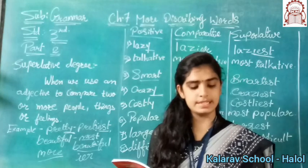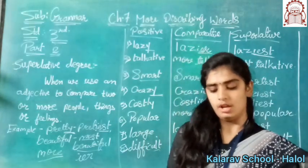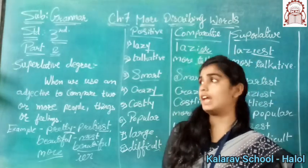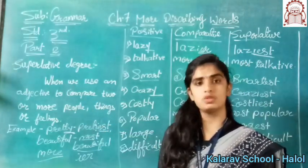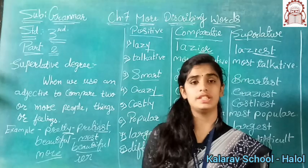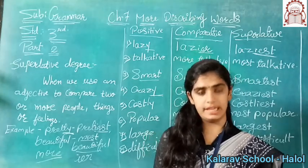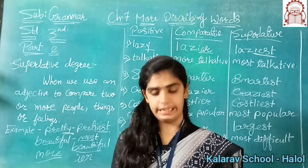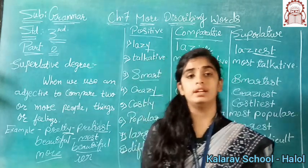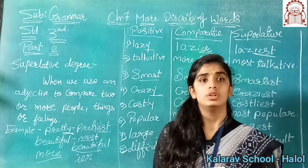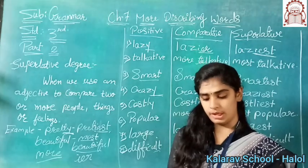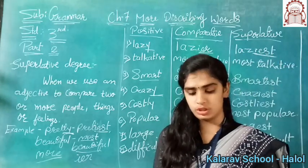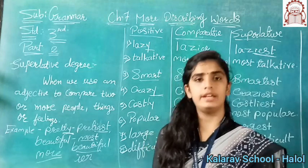Now see the fifth number: 'The Nile is said to be the ___ river in the world,' with options long, longer, and longest. There are many rivers in the world, so again we are comparing two or more rivers, so it will be superlative — 'longest.' Now the last number: 'Sneha's room is ___ than her brother's,' with options clean, cleaner, cleanest. Here we are comparing two things, so it will be 'cleaner,' because it is a comparative degree. Sneha's room is cleaner than her brother's.